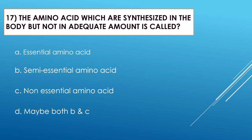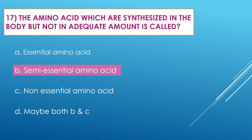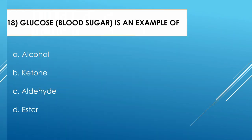Question number seventeen: The amino acids which are synthesized in the body but not in adequate amount are called — Option A: essential amino acid. Option B: semi-essential amino acid. Option C: non-essential amino acid. Option D: both B and C. The correct option is semi-essential amino acid.